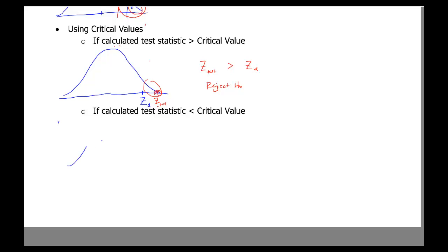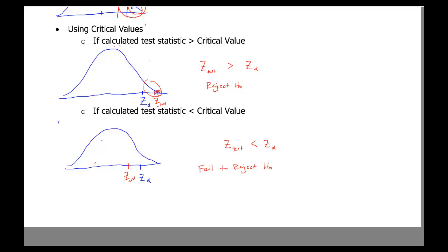If the critical value of z is here and your calculated value of z ends up being smaller, your value of z is less than the critical value, and the rule is to fail to reject the null hypothesis. So the rules are: if p-value is less than alpha, reject; if p-value is greater than alpha, fail to reject. Using the critical value method: if your calculated test statistic is greater than the critical value, reject; if less than the critical value, fail to reject.